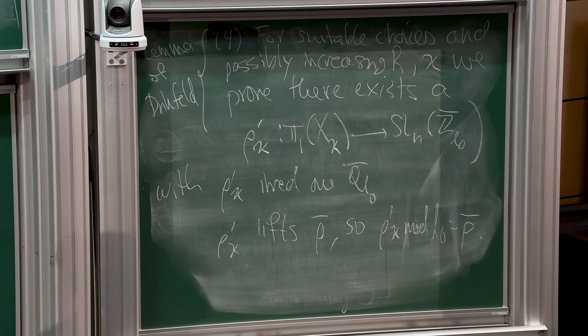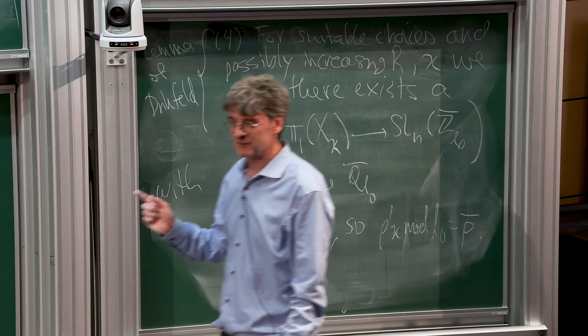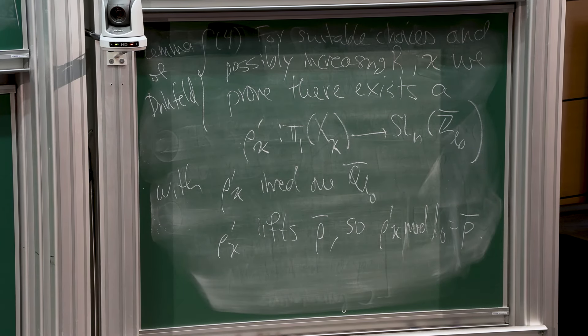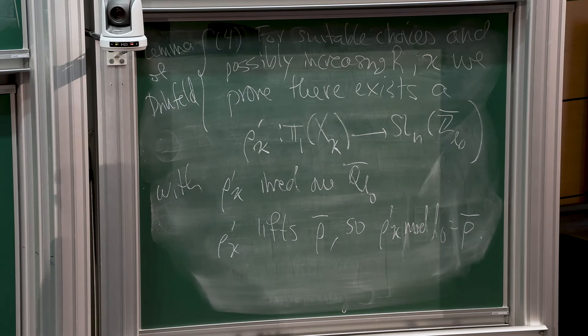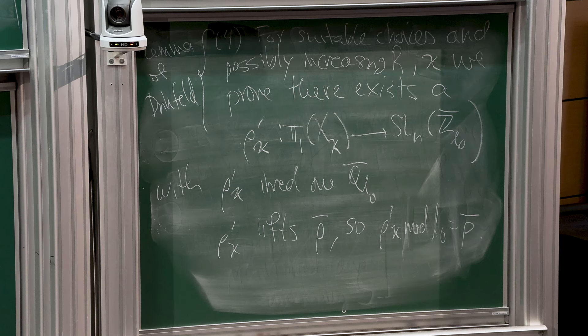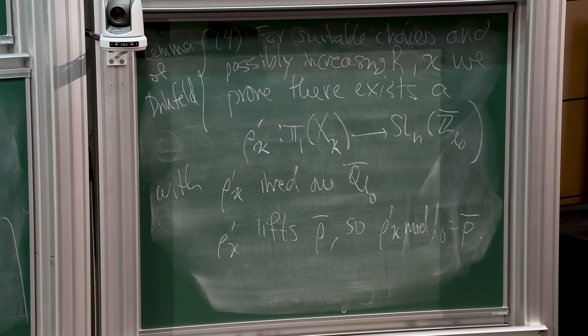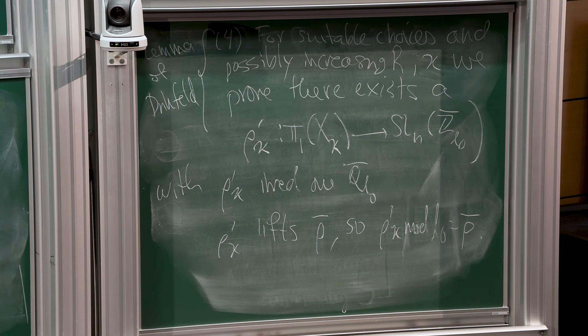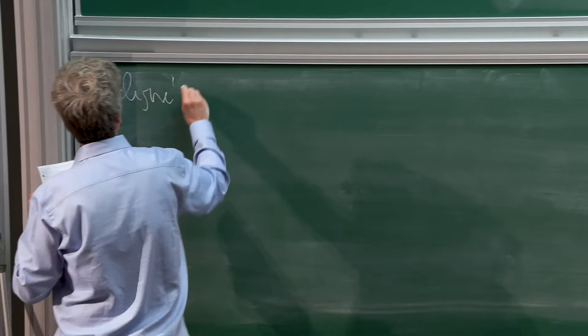For suitable choices, after increasing R and kappa, we prove there exists a rho prime kappa from the arithmetic fundamental group to SLN of ZL0 bar with two properties: rho prime kappa is irreducible over QL0 bar, and rho prime kappa lifts rho bar, so rho prime kappa mod L0 is rho bar.